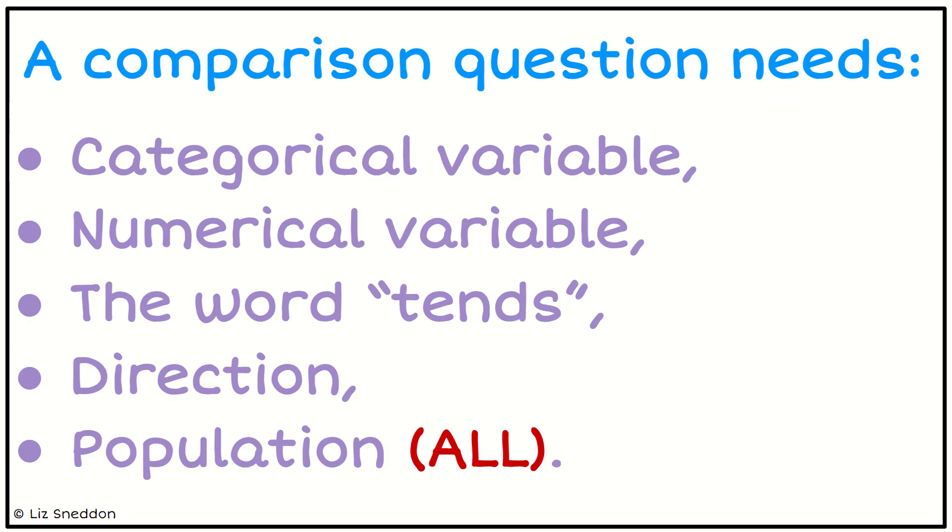So these are the different things that a question needs to have. It needs a categorical variable, so you need to choose two groups within that categorical variable. So if you had a categorical variable such as ethnicity where you had multiple different groups, you need to select two of those groups.